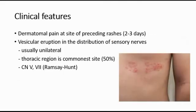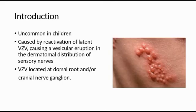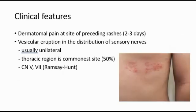This picture over here shows the vesicular rash seen in shingles. For clinical features, there is often dermatomal pain at the site of the preceding rash for two to three days, and there is vesicular eruption in the distribution of the sensory nerves, which is usually unilateral.